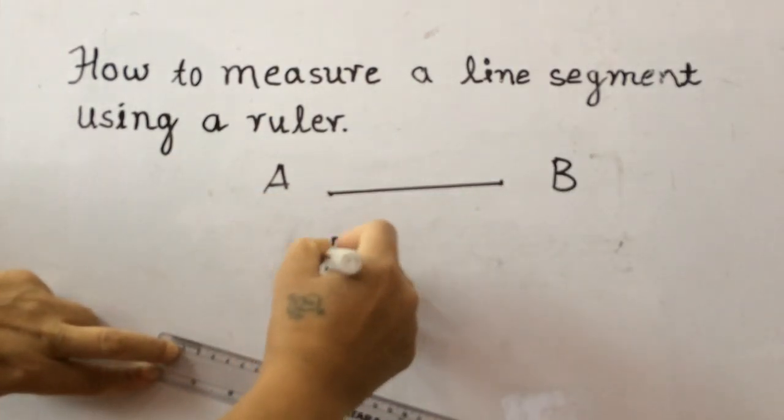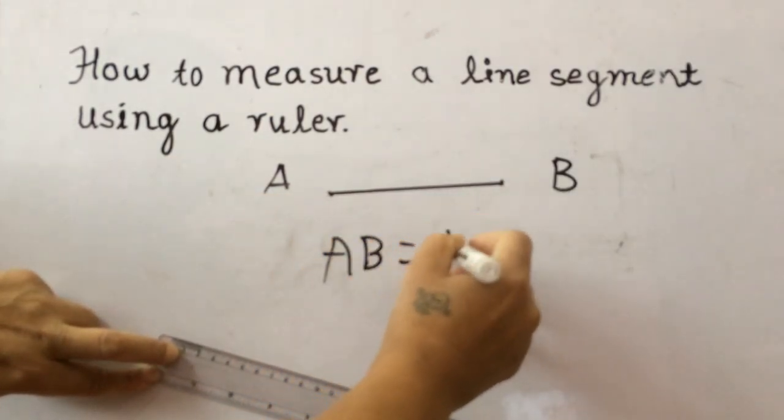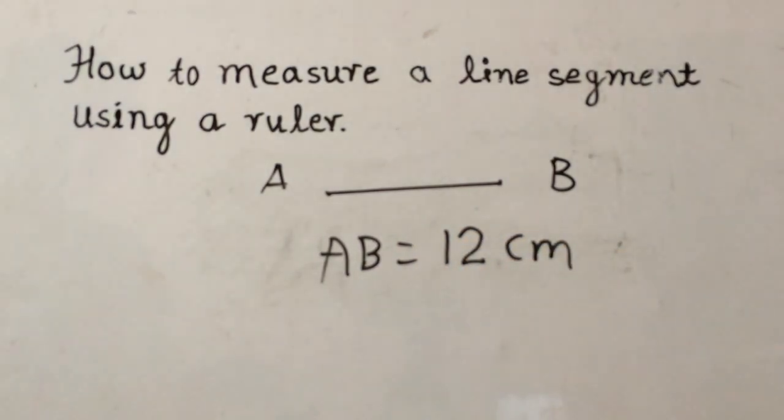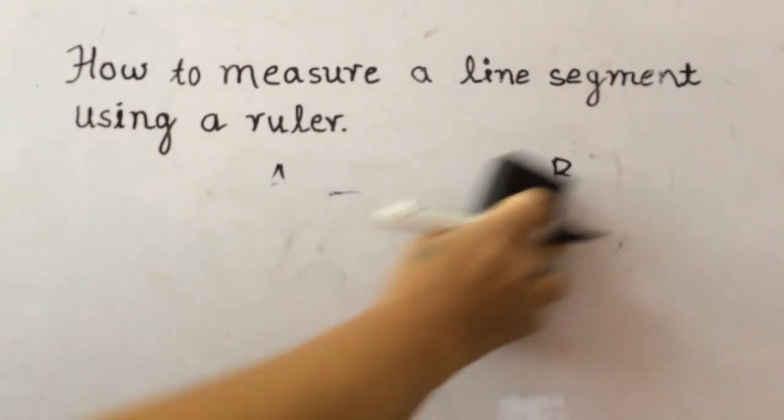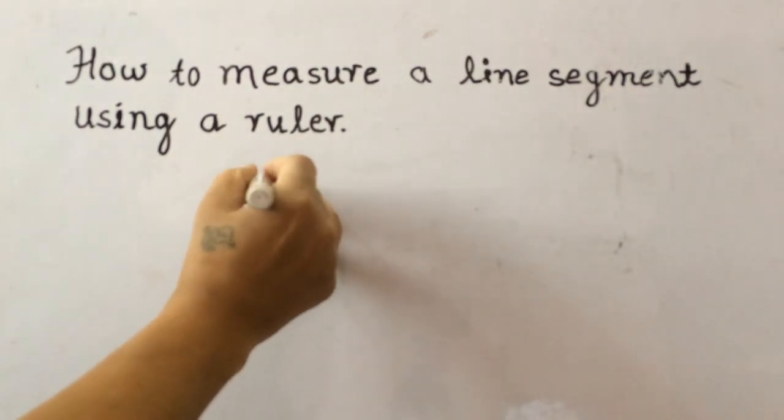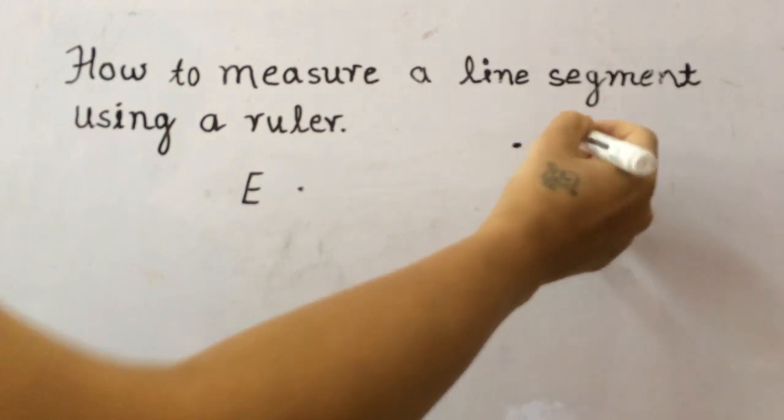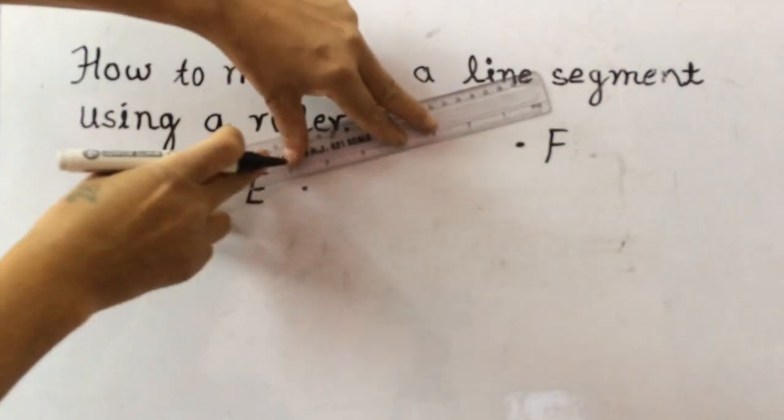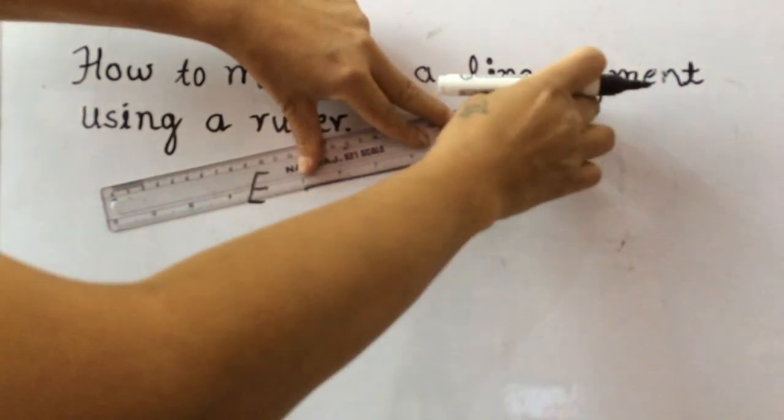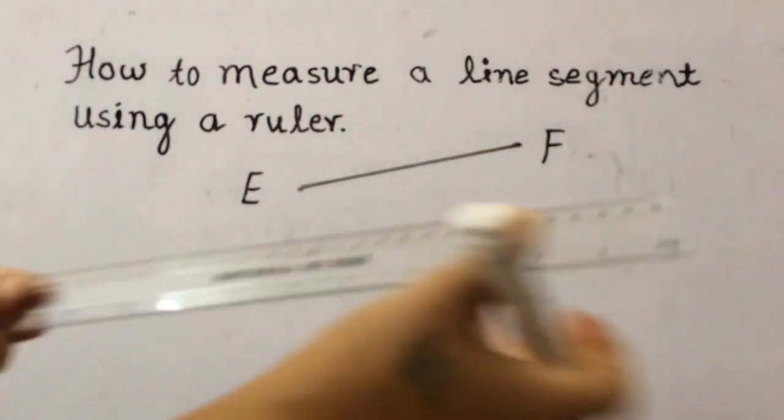We can see this AB line segment is 12 centimeters long. Let's take one more example: point E and point F. Join these two points. Now again, place this scale mark with 0 at the first point.